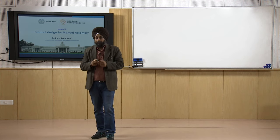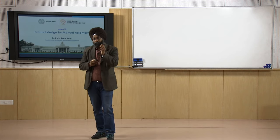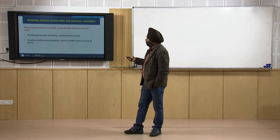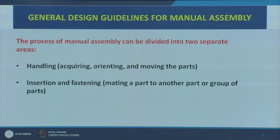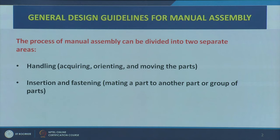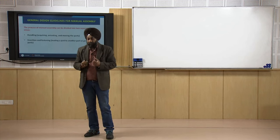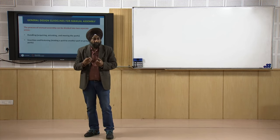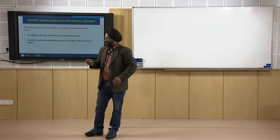What are these guidelines? What are the problems we usually see when workers try to assemble various parts together, and what rules of thumb should help us design the product so that the worker can easily assemble it? The process of manual assembly can be divided into two separate areas. When a person assembles two parts together, first is handling — acquiring the part, lifting it, taking the component from the bin — which includes acquiring, orienting, and moving the parts.